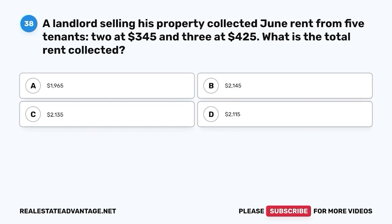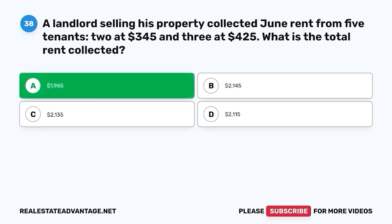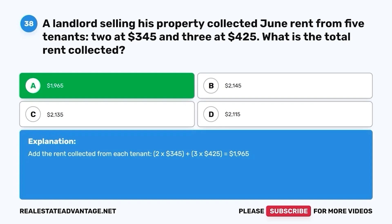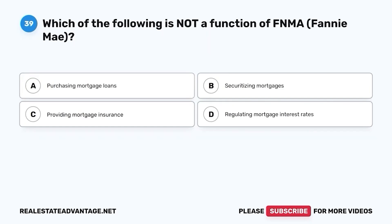Question 38. A landlord selling his property collected June rent from five tenants — 2 at $345 and 3 at $425. What is the total rent collected? A. $1,965. B. $2,145. C. $2,135. D. $2,115. The correct answer is A. $1,965. Add the rent collected: 2 × $345 + 3 × $425 = $690 + $1,275 = $1,965.